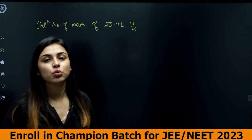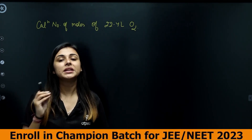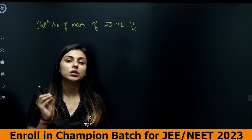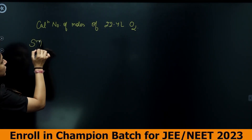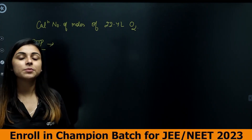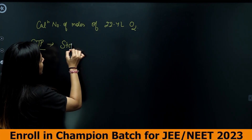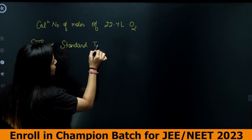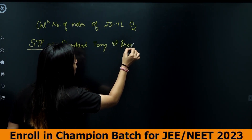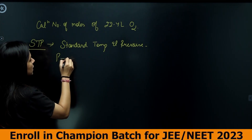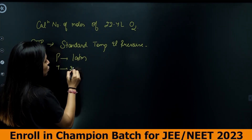At STP, pressure = 1 atmosphere and temperature = 273 Kelvin. The volume of a gas depends only on temperature and pressure — if these are constant, volume is also constant. At STP conditions, 1 mole of any gas occupies 22.4 liters of volume.